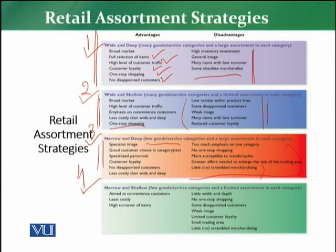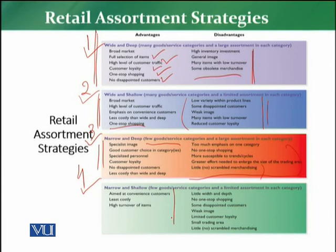The last method is the narrow and shallow assortment strategy. In this strategy, a retailer offers few goods and services categories and limited assortment in each category. It is the lowest level, offering limited categories and limited assortment. The advantages are that it aims at convenience customers — these retailers are convenience stores offering a convenience assortment. They are less costly and the turnover of items is high because there are few items they know will sell quickly.